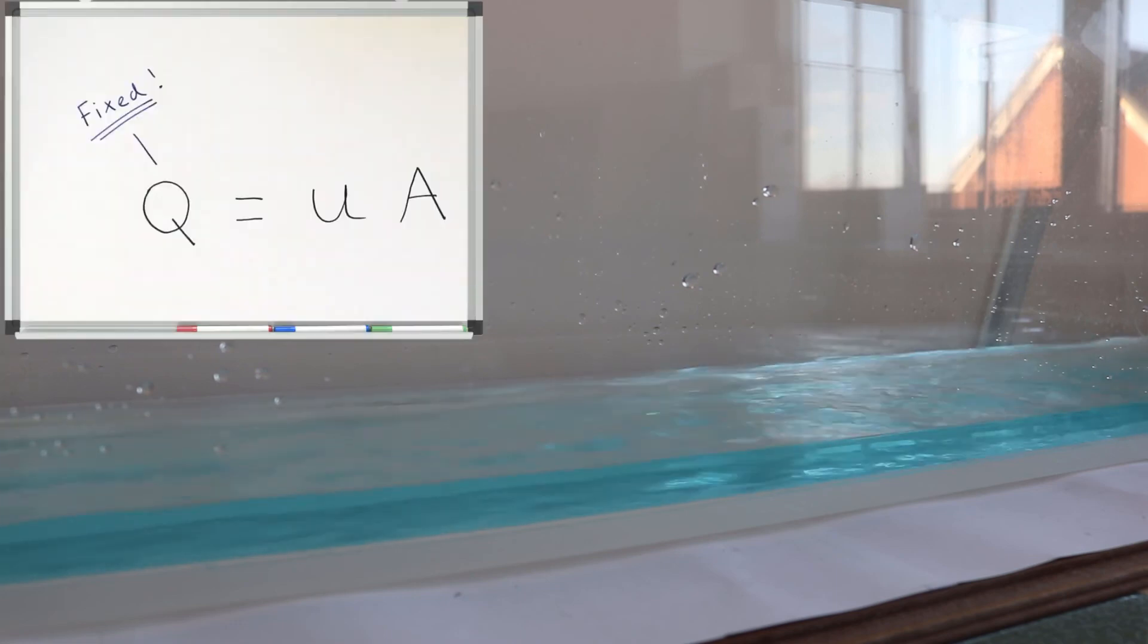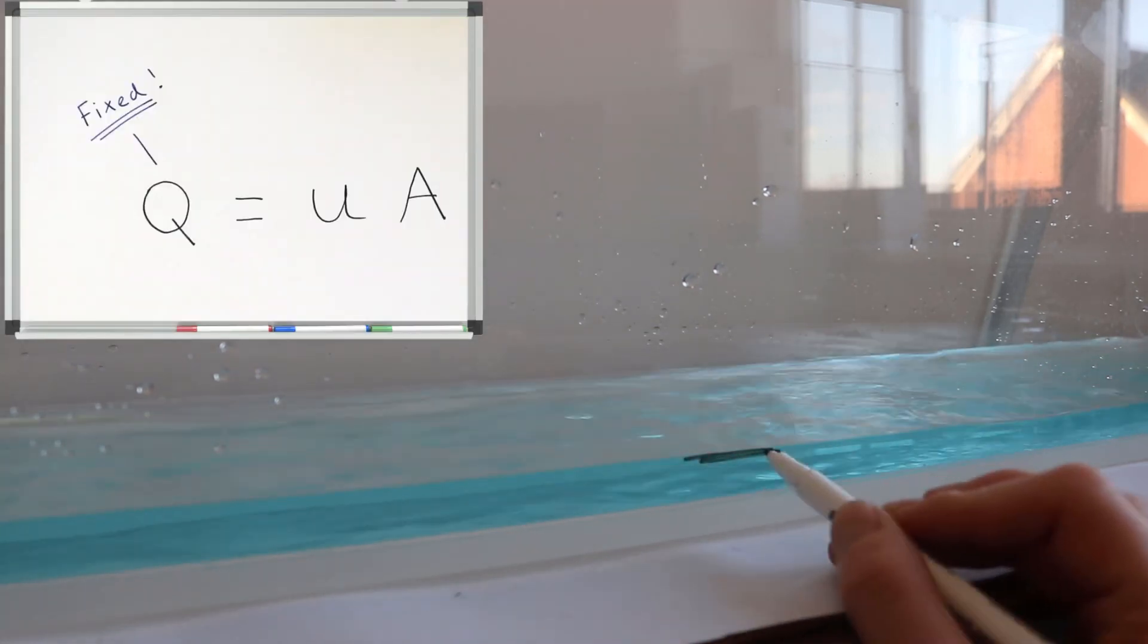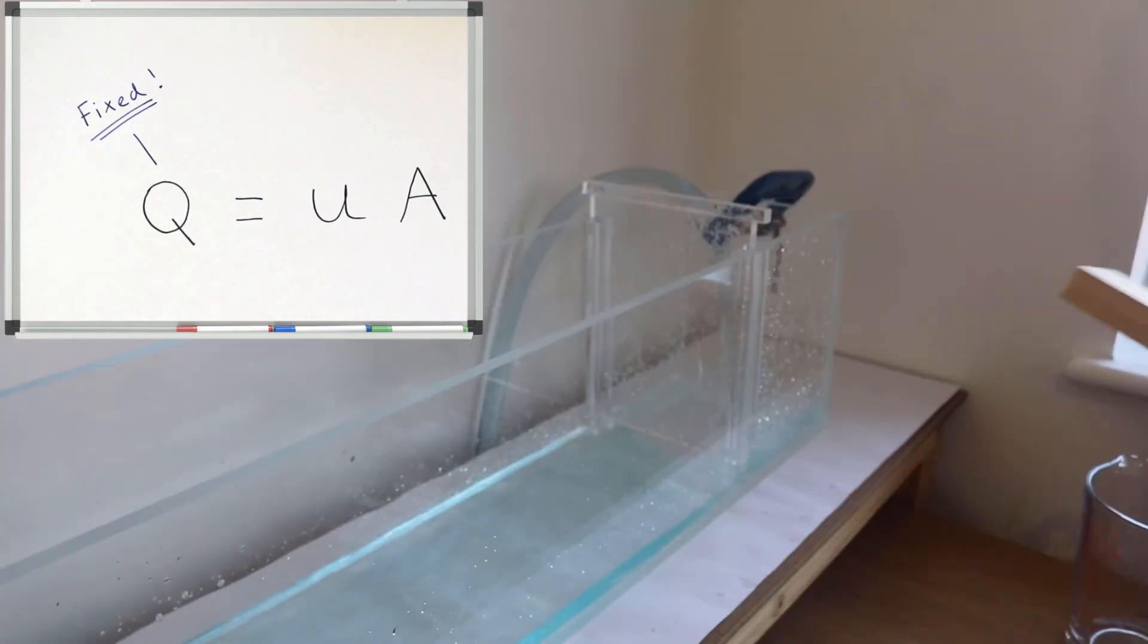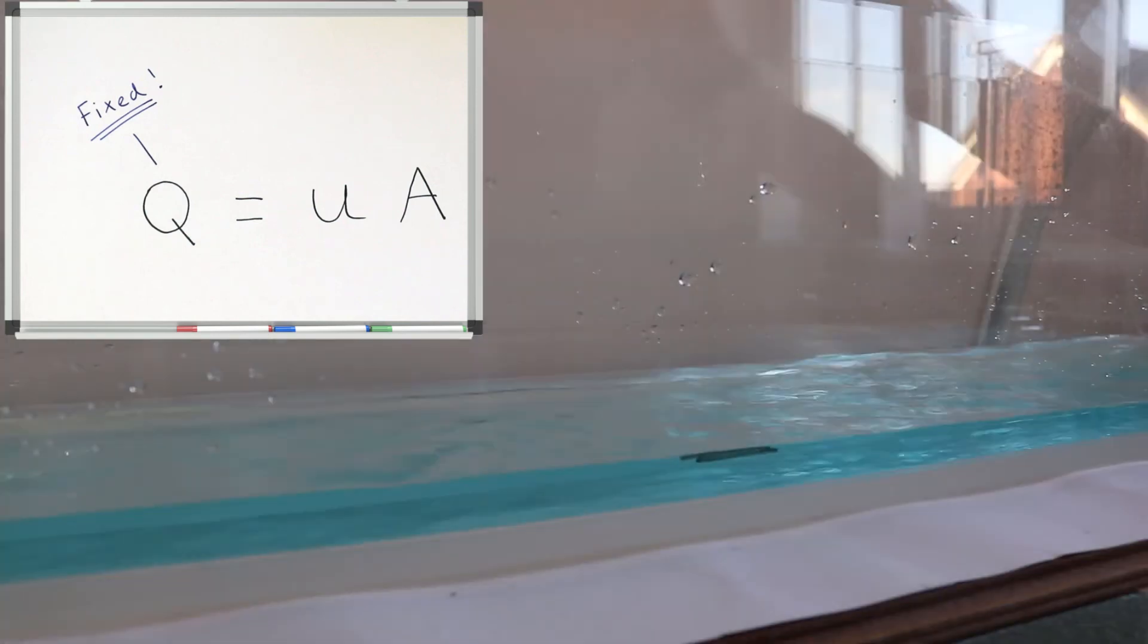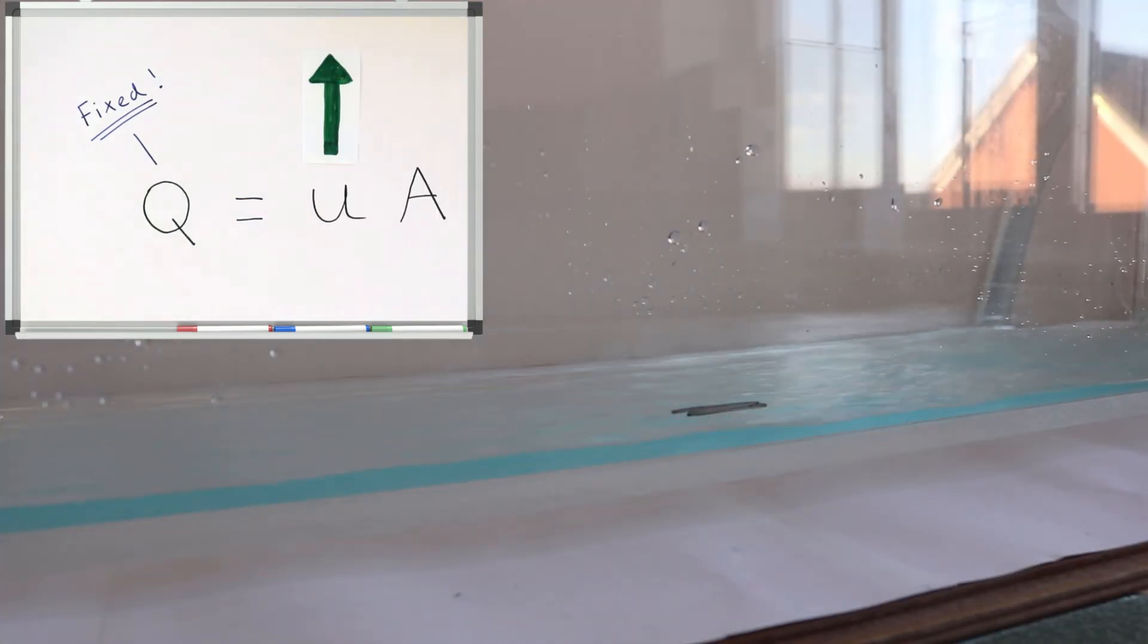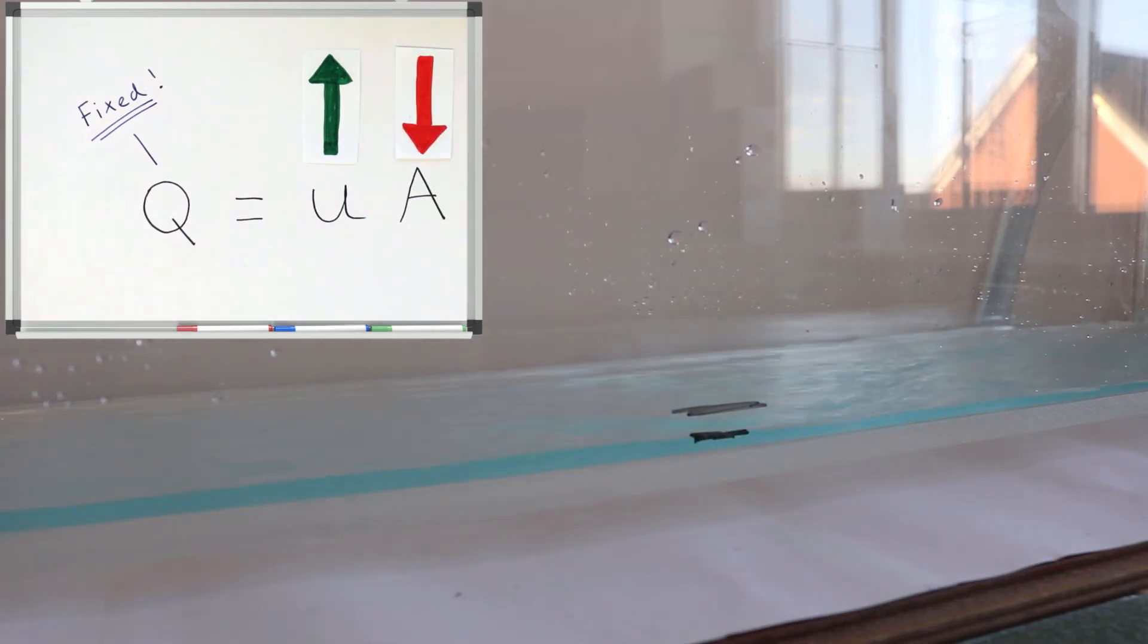For example, the flow here starts at the depth I've marked. But if I increase the gradient of the flume, the effect of gravity will force the velocity of the water to increase, and as such, the area must decrease to conserve discharge, which is constant.